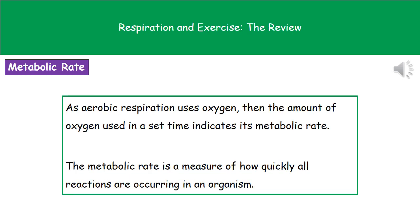We may also talk about something called the metabolic rate. An organism's metabolic rate is basically a measure of how quickly all the reactions are occurring within that organism. What we can actually do to work out the metabolic rate is think about the aerobic respiration — as aerobic respiration uses oxygen, the amount of oxygen used in a set period of time is going to indicate the organism's metabolic rate. It's a good indication of metabolic rate just by looking at how much oxygen is being used in any given time period.